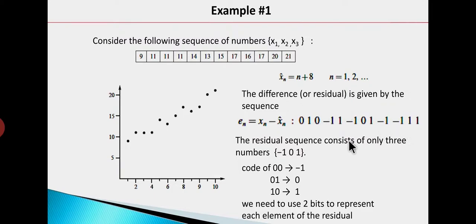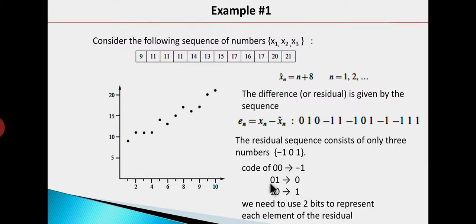This is the residual — the difference between the data and the model. We need to encode this residual in the coding phase. Looking at the symbols, there are three symbols: 0, 1, and minus 1. We can assign two-digit binary codes: assign minus 1 to 00, encode 0 to 01, and encode 1 to 10 or 11.